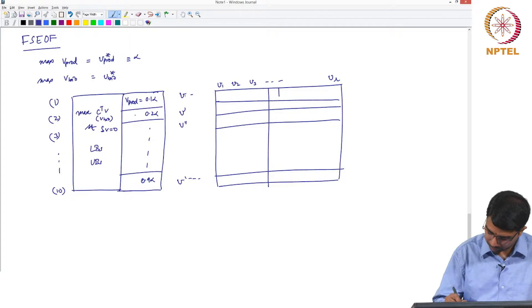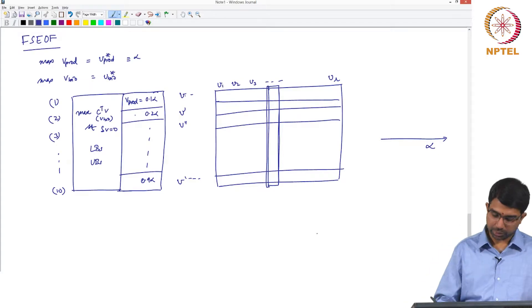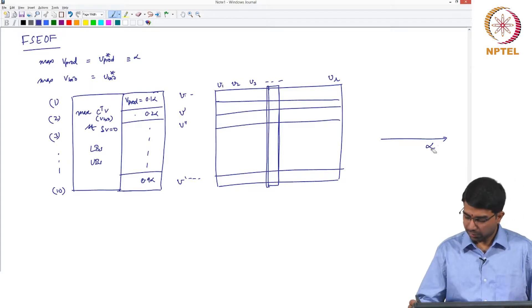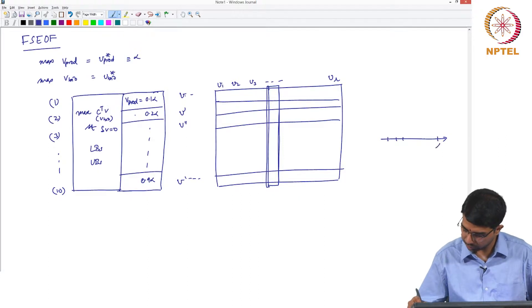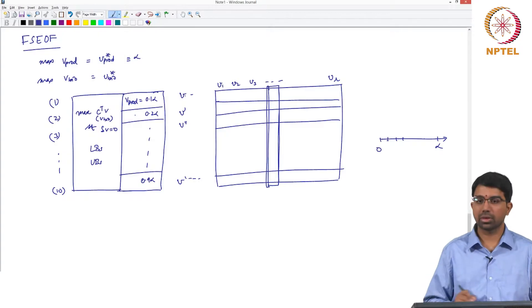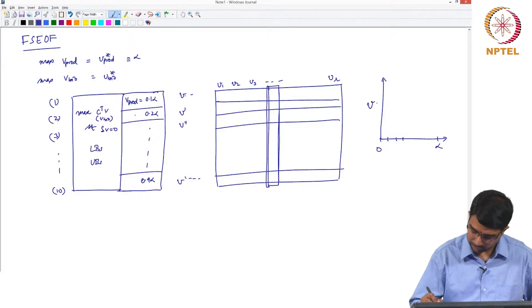Now you take every column that is here and you plot it. Alpha, or let us just call it some, so this will be 0.1 alpha, 0.2 alpha, 0.3 alpha, alpha, 0 to alpha. And you plot the flux of V1 or Vj.